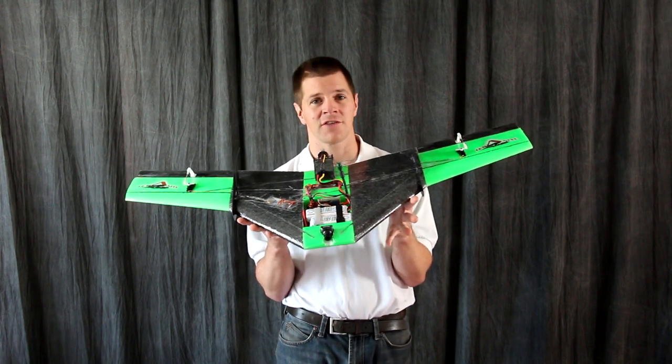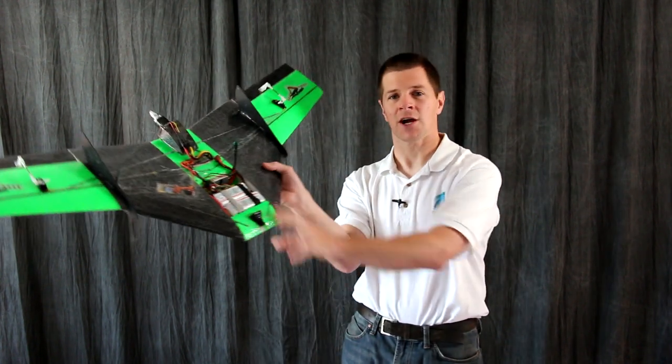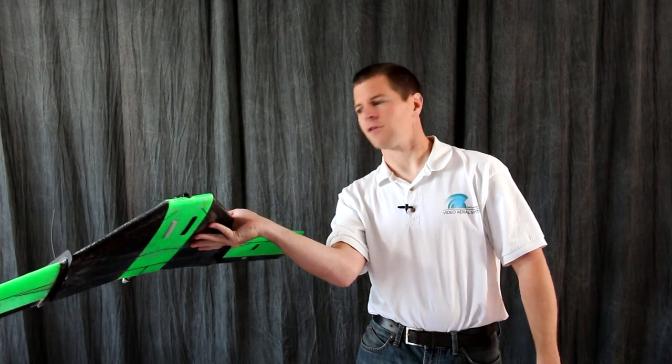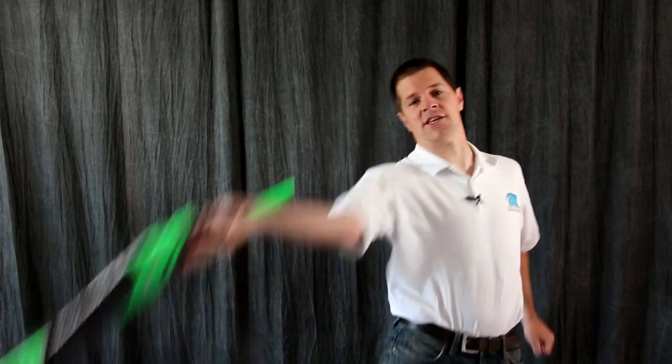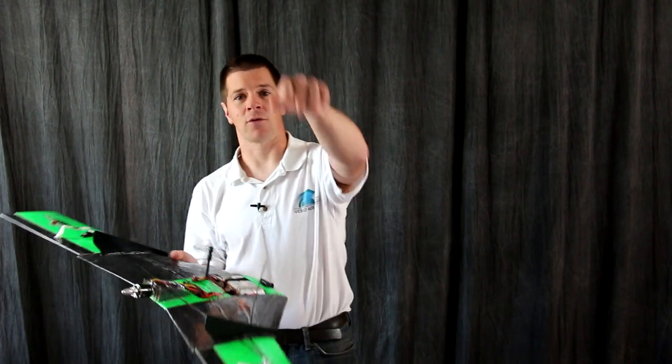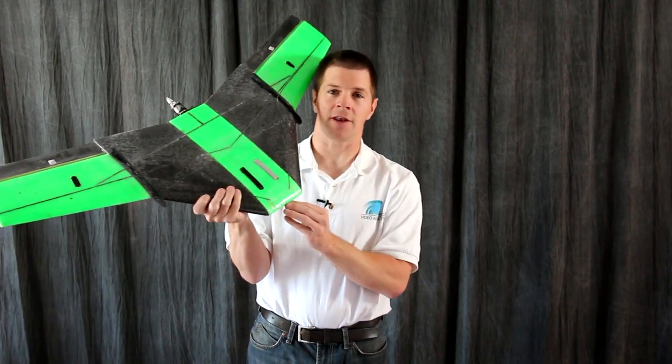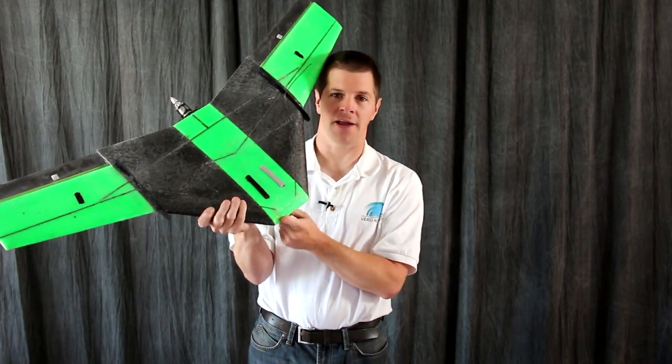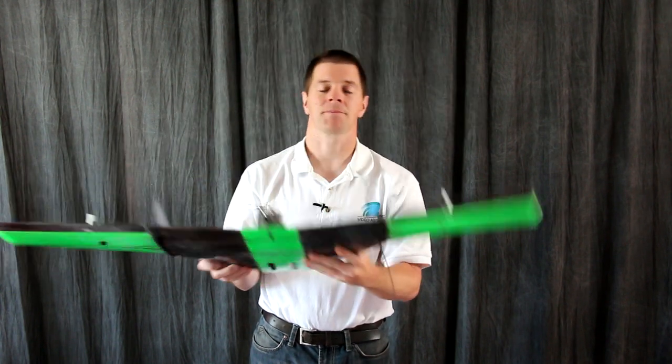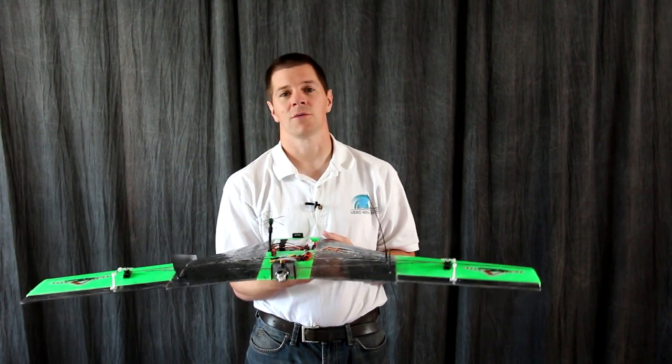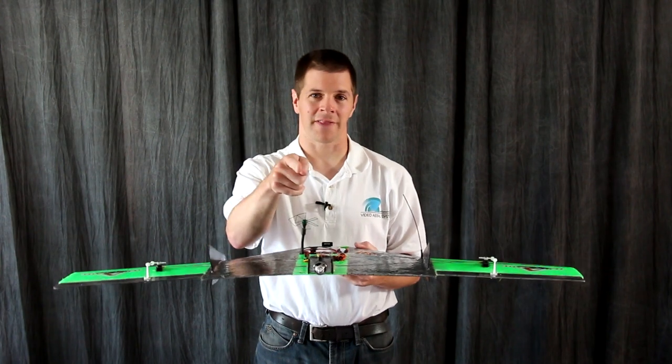The way to launch this airplane is to simply grab it right here and aim it about 45 degrees in the air, throttle up and just give it a good toss and out it will go. The center of gravity on this airplane is 7 and 3 quarters of an inch behind the leading edge back here. So with that, let's start building the airplane.